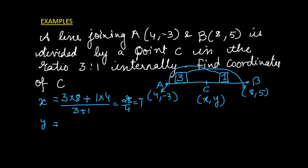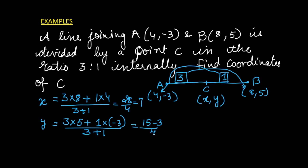Similarly, the y-coordinate: 3 multiplied by the y-coordinate of the opposite side plus 1 multiplied by the y-coordinate of the other side, divided by the sum 3 plus 1. We get 15 minus 3 over 4, which is 12 over 4, giving us 3. So the coordinates of C by the section formula are (7, 3).